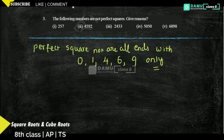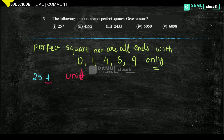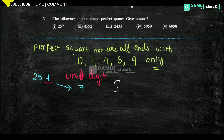First one is 257. The unit digit is 7. It is not matching with any of the values 0, 1, 4, 6, 9. So 257 is not a perfect square number.